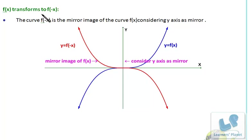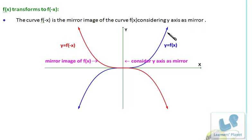When f(x) transforms to f(-x), the curve f(-x) is the mirror image of the curve f(x) considering the y-axis as the mirror. This is the graph of f(x) — the blue line — and this will be the graph of f(-x), just an inversion along the y-axis. You can verify the same thing by looking in the mirror.